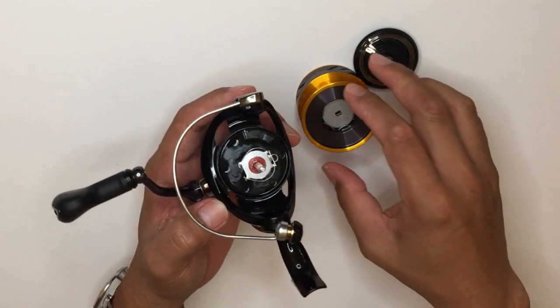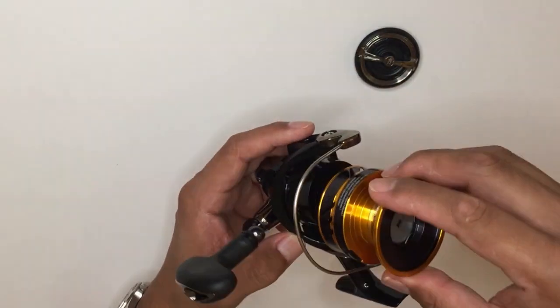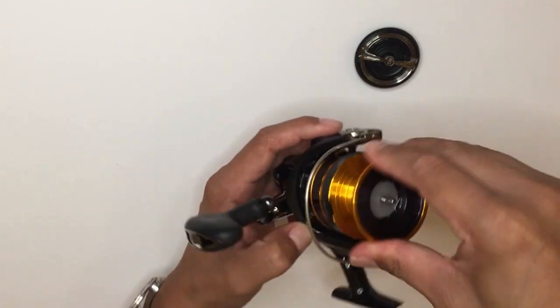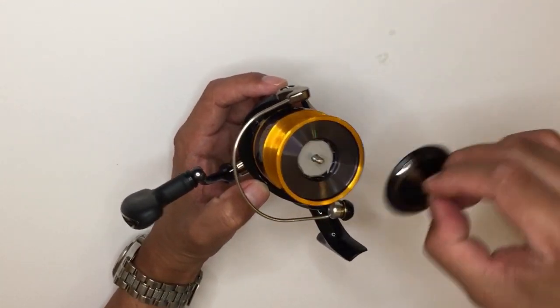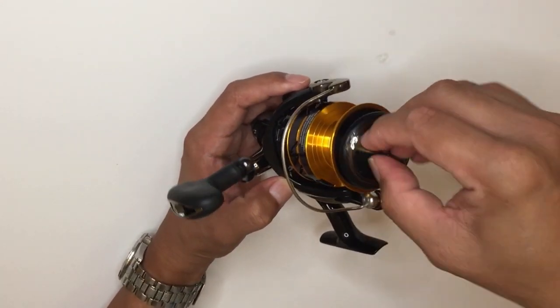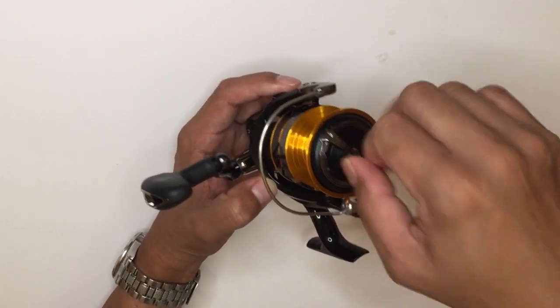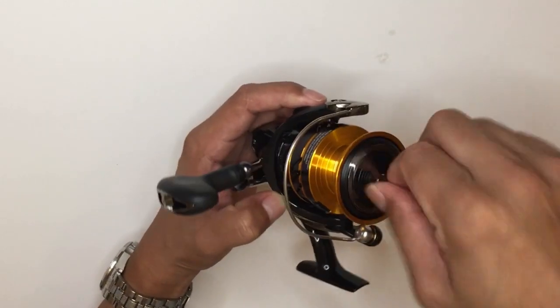We have the Twist Buster and Digi Gear. This is the Daiwa feature where they improve the meshing of the gear, which makes the reel smoother compared to the previous model.